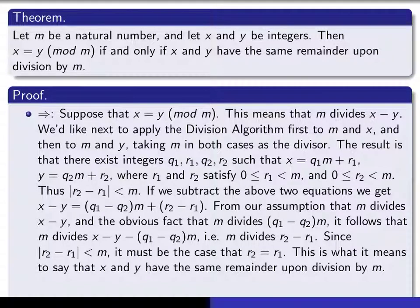So here's my proof of the forward direction. We're going to assume that x is congruent to y modulo m. That means that m divides x minus y. So next we're going to apply the division algorithm first to m and x and then to m and y. m is going to be the divisor in both cases. So that means we can write x in this form. We can write y in this form for integers q1, r1, q2, r2, where the remainders satisfy these inequalities here.